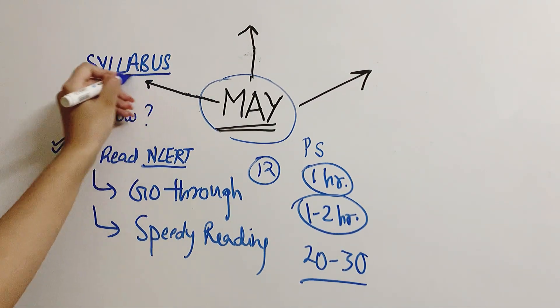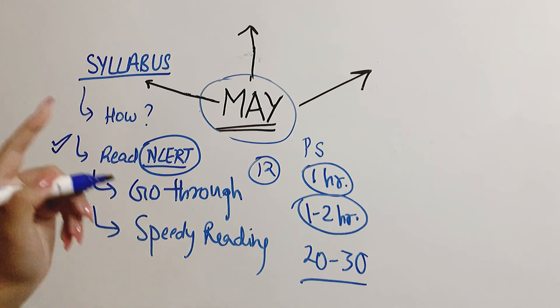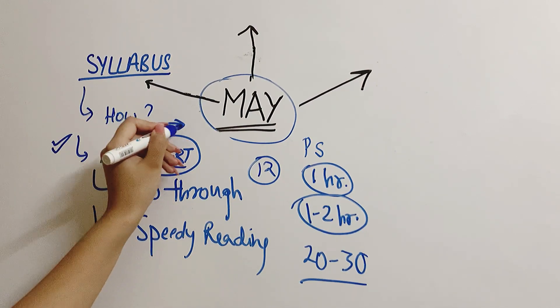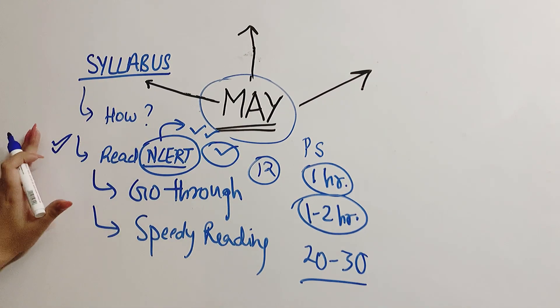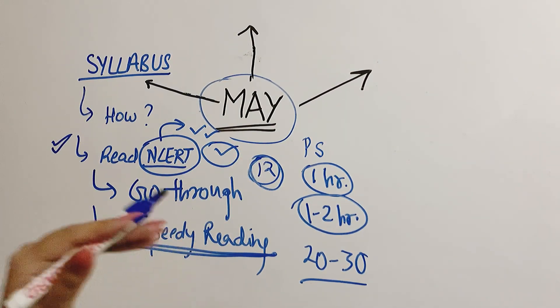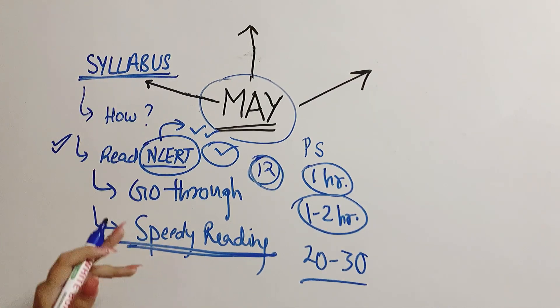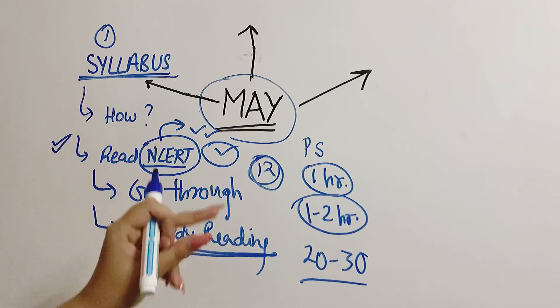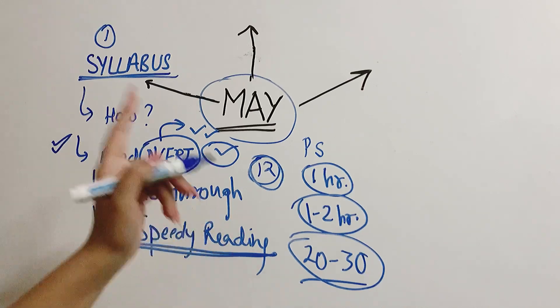This is a master stroke for revising your syllabus. What happens is, we read NCERT, so the language of NCERT, those words get embedded in our mind. This is a very good technique, speedy reading. Don't be a fool and don't sit for 12 to 8 hours just reading books. No, that is not what I mean. I mean go through your syllabus by speedy reading. So the first part of May is to go through the syllabus again by covering the NCERT and reading it quickly in a span of 20 to 30 minutes per chapter.